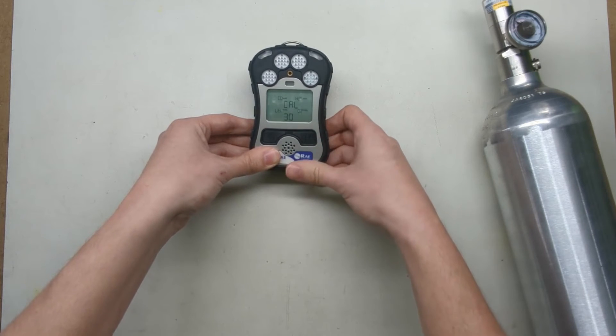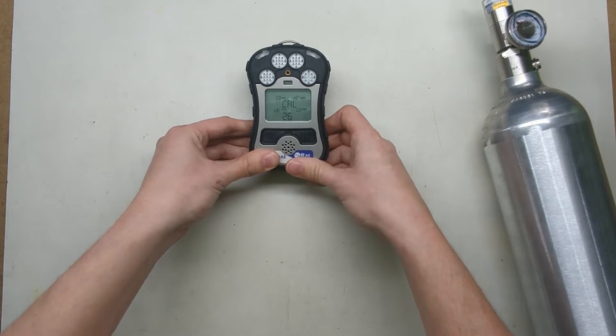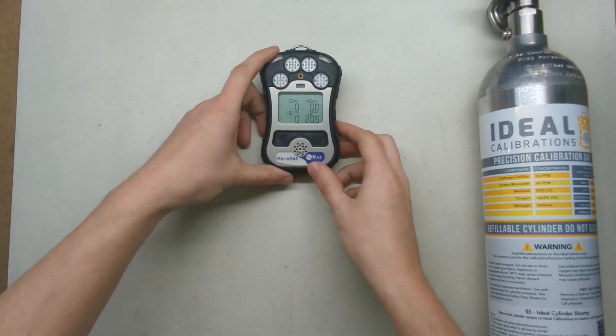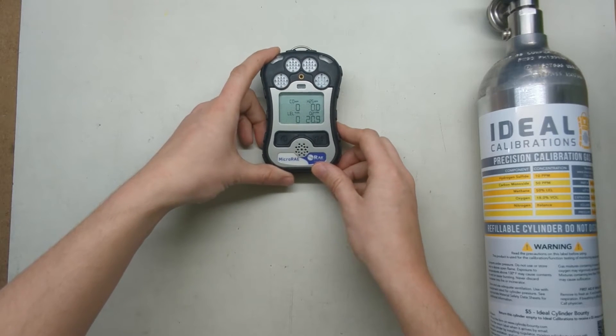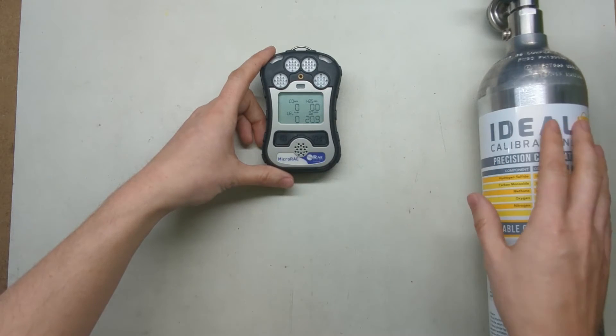You have to press enter one more time and it'll start counting down. Okay, the countdown is mostly done. I'm just going to let it finish out. Now we've got passes across the board. If you see a fail here, you might need to recalibrate the sensors and try another shot at it. Go through the rest of the procedure anyway.